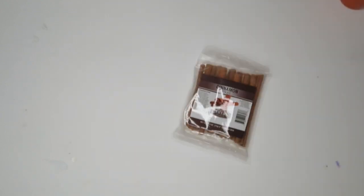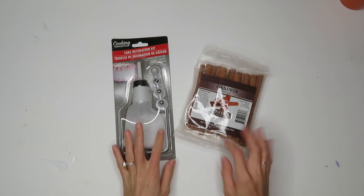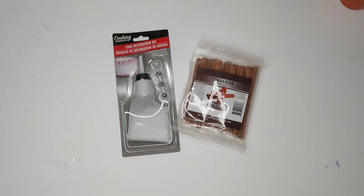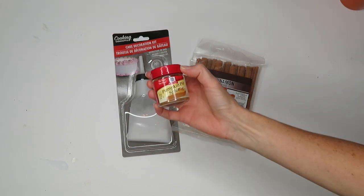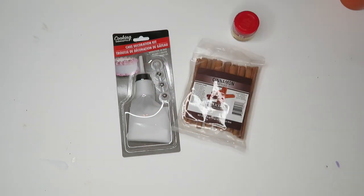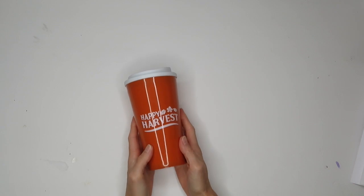The first thing you're going to need is a cup. I chose to use this harvest cup. You're also going to need some lightweight spackling. I got a package of these cinnamon sticks, and you're also going to need this cake decorating kit. I already had some pumpkin spice on hand, but the Dollar Tree does carry that as well.